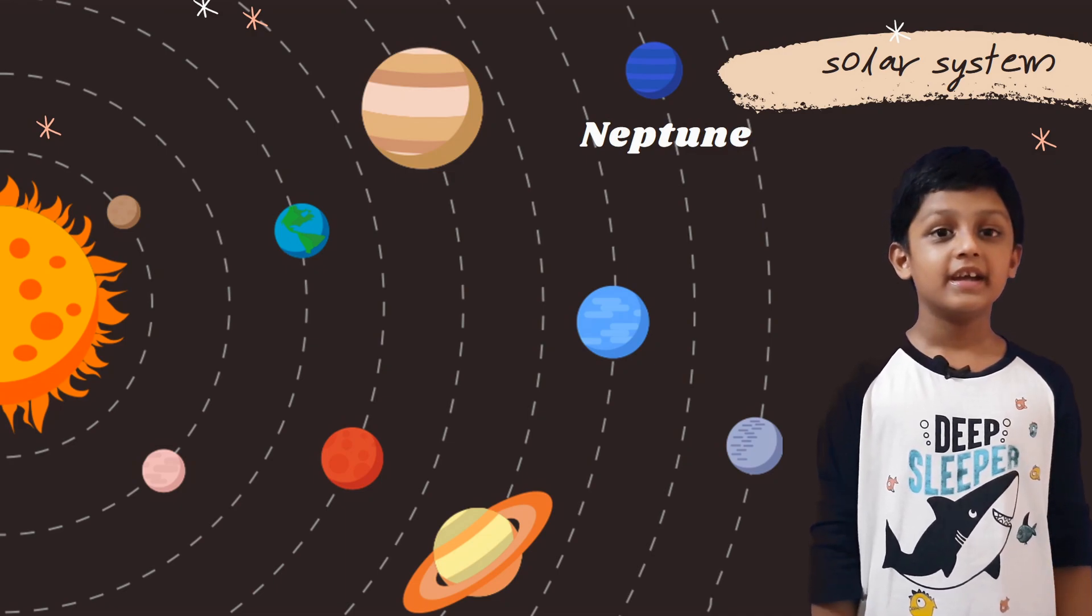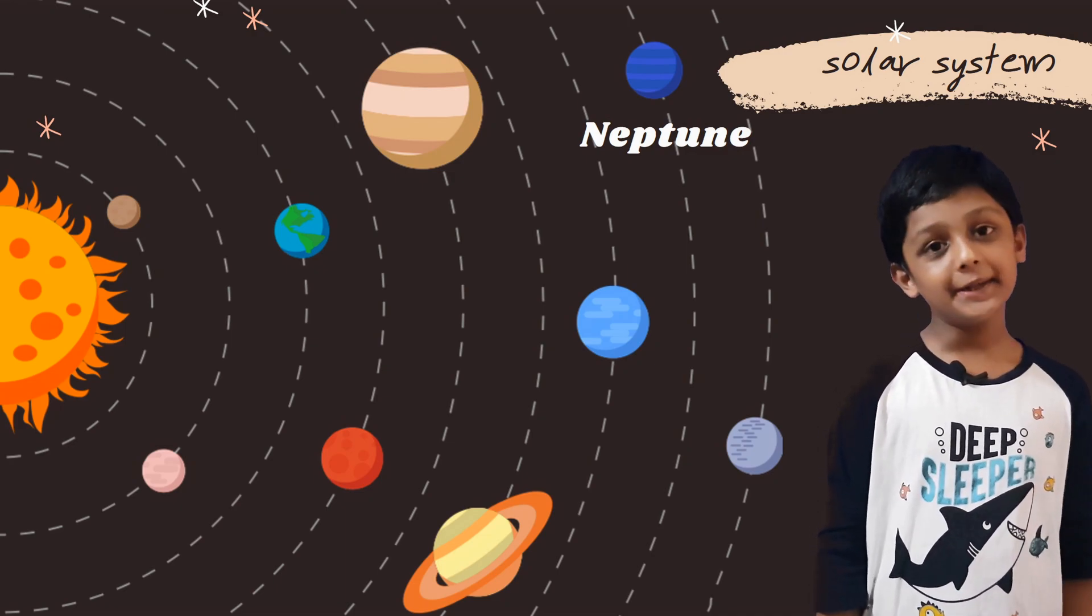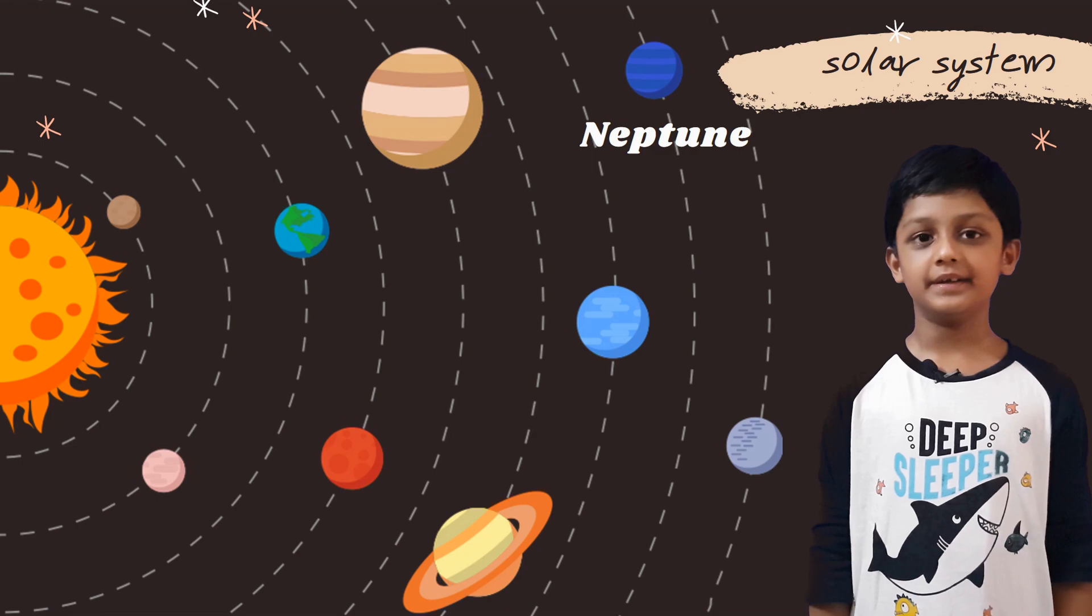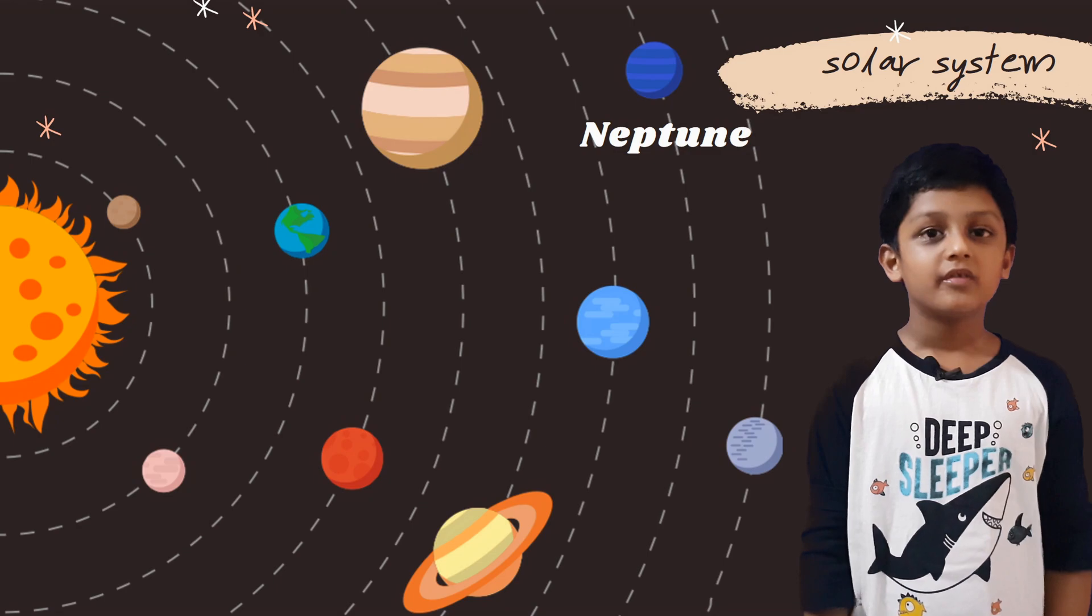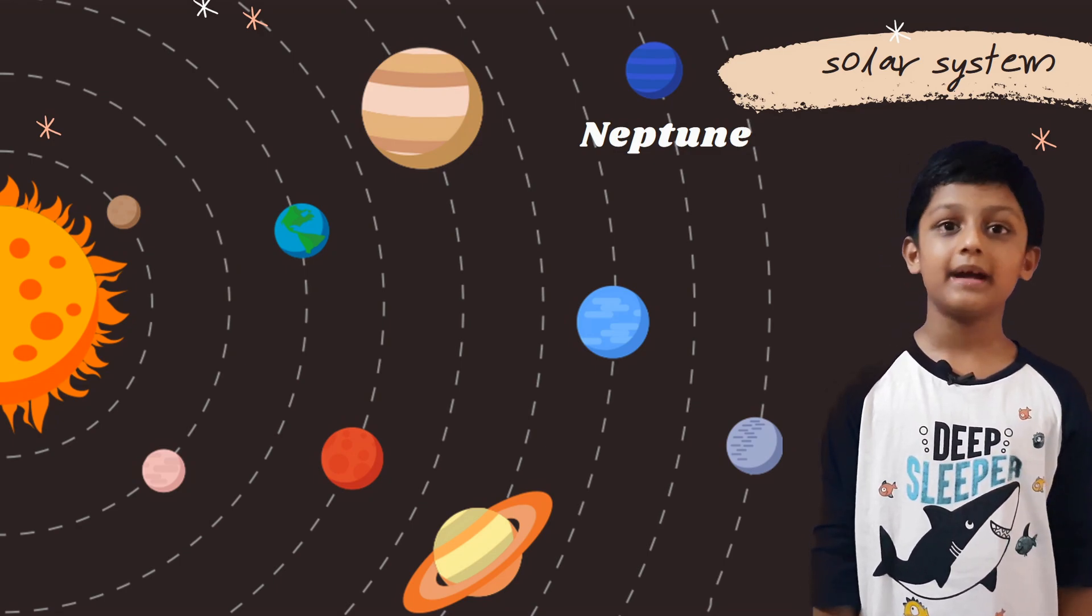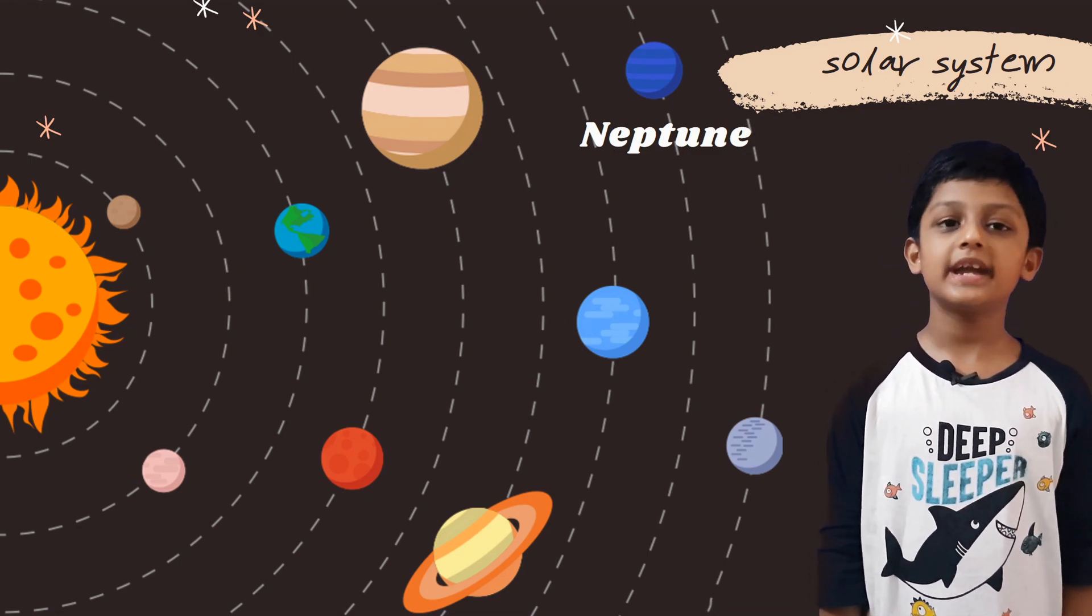Neptune, it is the eighth planet from the sun. It is the coldest planet in the solar system. And it has fourteen moons.